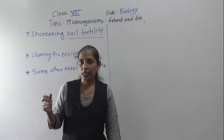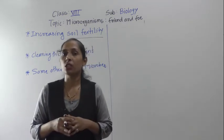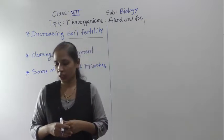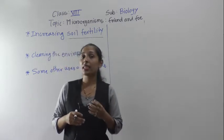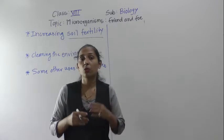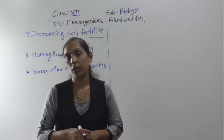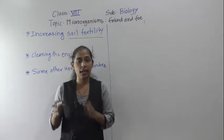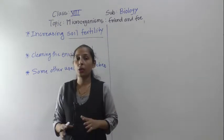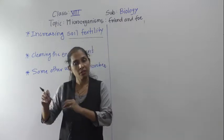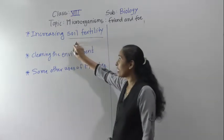Along with Rhizobium, certain other bacteria and blue-green algae also help to increase soil fertility by fixing nitrogen in the soil. These microbes — Rhizobium bacteria and blue-green algae — are called biological nitrogen fixers. This is how microorganisms help in increasing soil fertility.